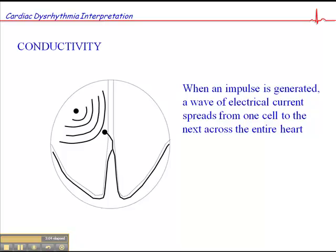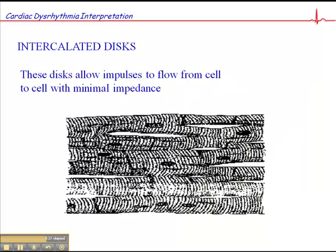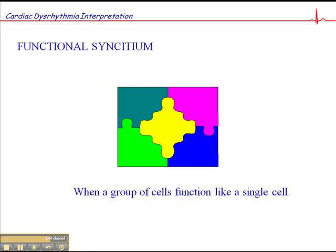Conductivity, in very simple terms, describes the concept that when an impulse is generated, a wave of electrical current spreads from one cell to another across the entire myocardium — so it's an all-or-nothing effect. When one cell depolarizes or conducts current, it stimulates all surrounding cells to depolarize or conduct current, and we get this wave of current moving across the myocardium. Separating the cardiac cells are intercalated discs, which allow impulses to flow from cell to cell with minimal impedance. In fact, conduction across the myocardial cells is so fast that the heart has been described as a group of cells that function like a single cell — a concept called functional syncytium.